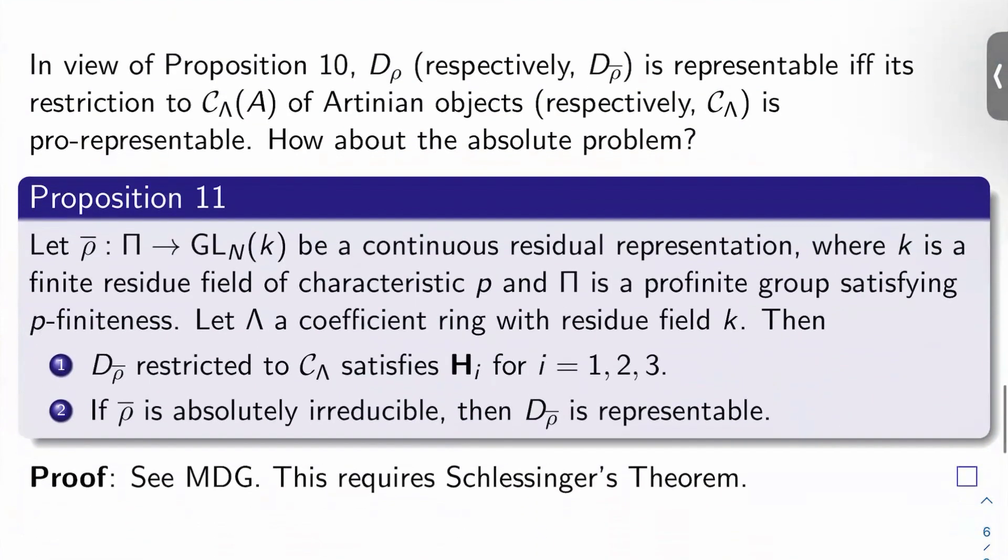So how about the absolute problem? In view of the proposition we just talked about, D sub rho, respectively D sub rho bar, is representable if and only if its restriction to C lambda of A of Artinian objects, respectively to C sub lambda for the absolute problem, is pro-representable. So how about the absolute problem?